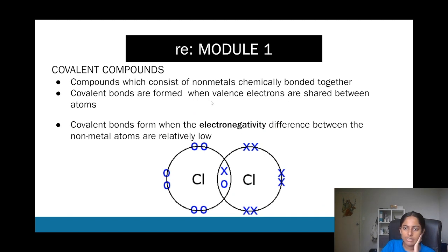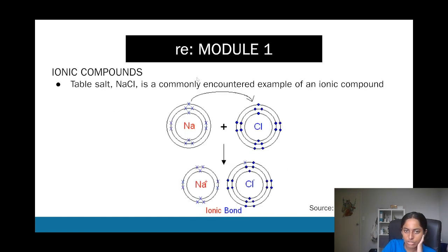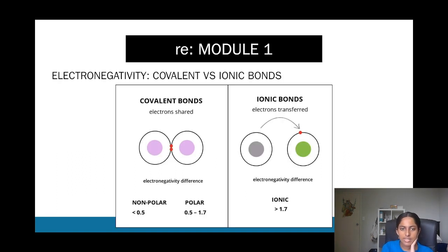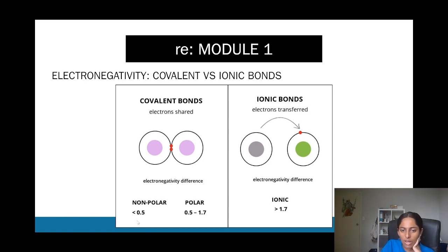Covalent compounds have shared electrons — specifically the valency electrons, which are electrons in the outer shell. Only valency electrons matter in bonding, not the ones in the inner shells. Because elements forming covalent bonds are similar in position on the periodic table, they have a lower electronegativity difference — typically between 0.5 and 1.7. For ionic bonds it's greater than 1.7. Covalent bonds can also be polar or non-polar.